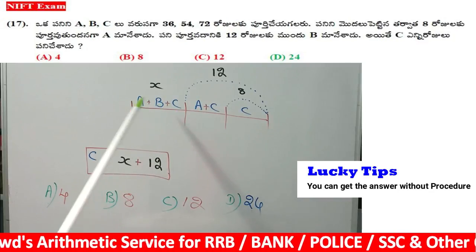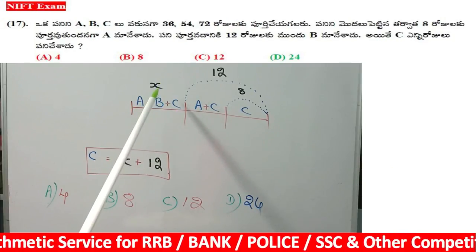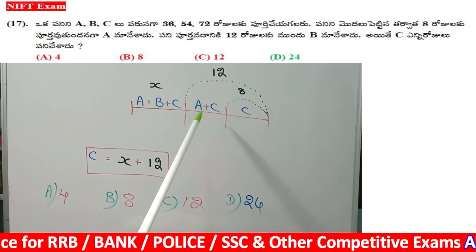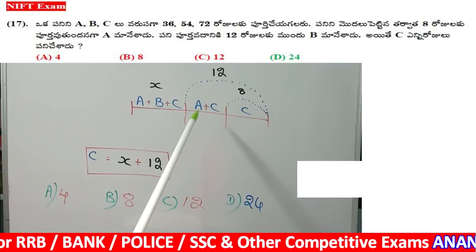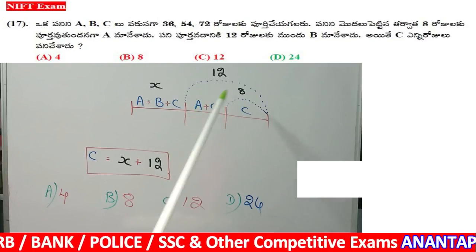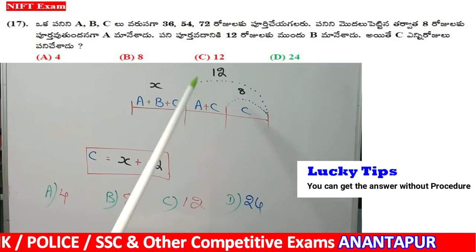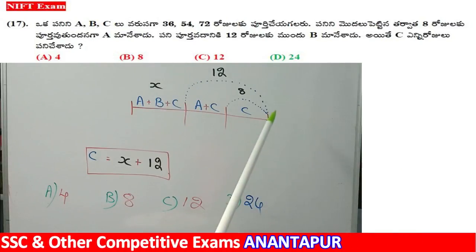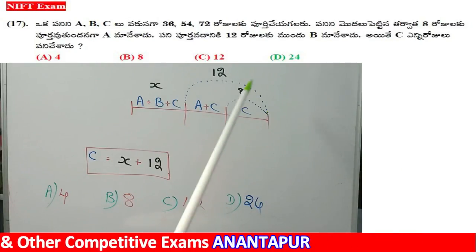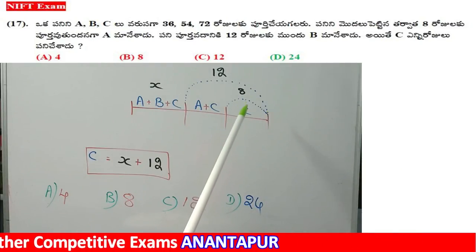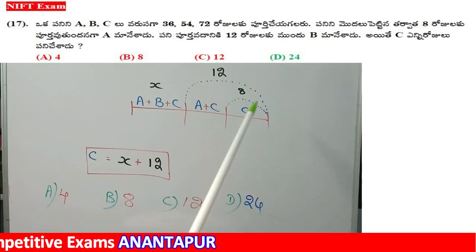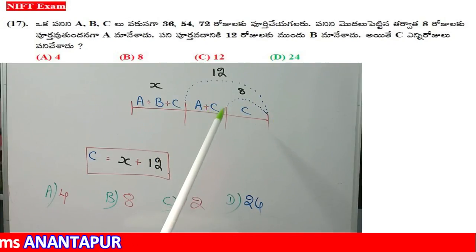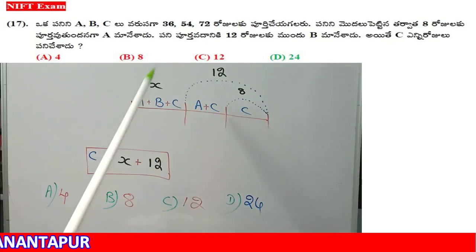Here there are three people — X, D, C — then B left. For the next question, if there is any doubt about A, then B also left. In how many days was the work completed?